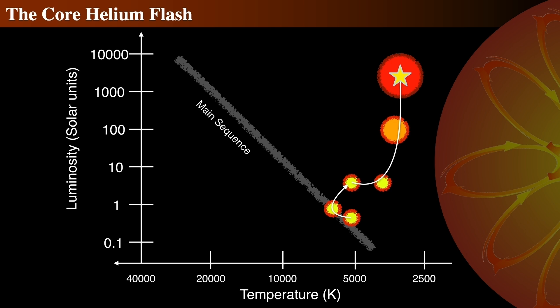It's absorbed by the envelope above, perhaps causing a short burst of mass loss from the surface of the star. But in general, this event is hidden from view and has never been seen observationally. This is called the helium flash and occurs only in low-mass stars.